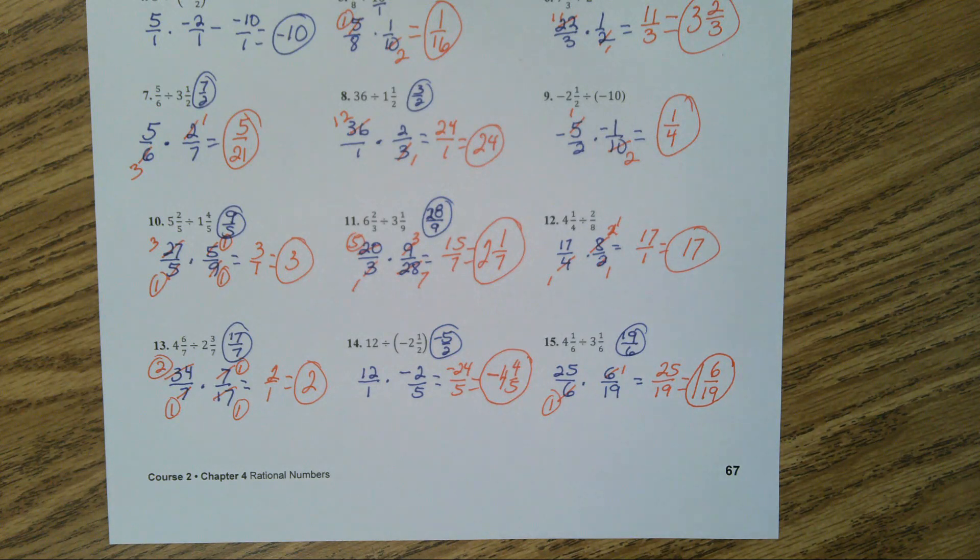Number 13, 2, 14, negative 4 and 4 fifths. Number 15, 1 and 6 nineteenths.